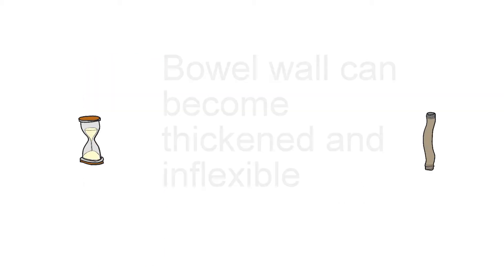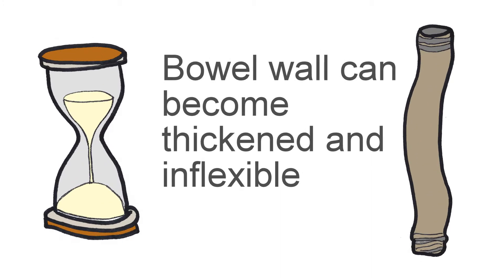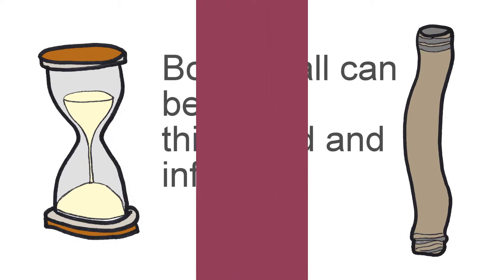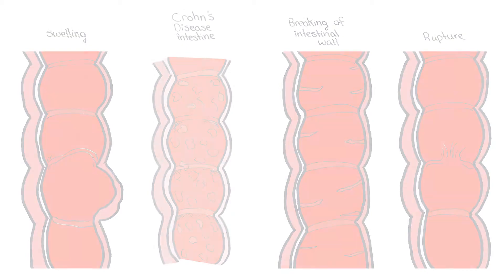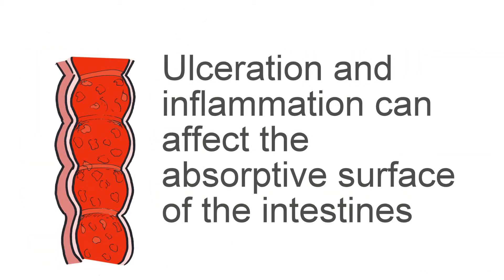After time, the bowel wall can become thickened and inflexible like a lead pipe. Ultimately, the narrowing can cause obstructions to the flow of digesting food through the intestines. Furthermore, ulceration and inflammation can affect the absorptive surface of the intestines, interrupting nutritional absorption. This is why people with Crohn's experience weight loss and fatigue.